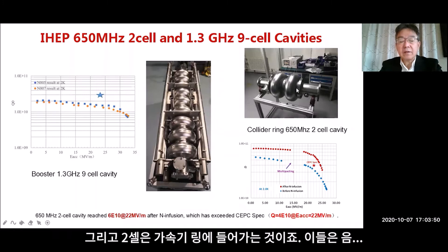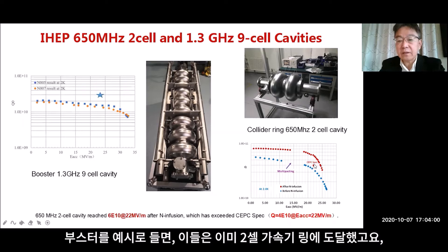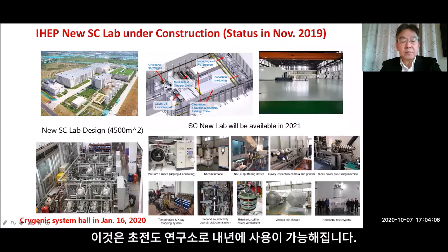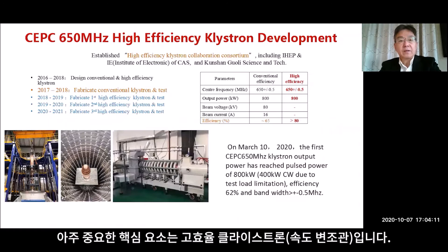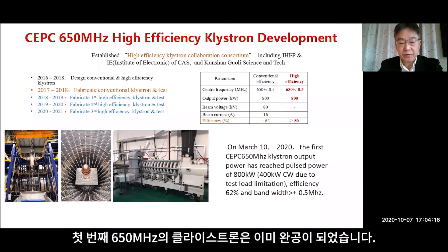The two-cell cavity is for the collider ring. For the booster, they have already reached the design goal, and the collider ring two-cell cavity has also already reached the design goal. A new superconducting laboratory will be available next year. A very key component is the high-efficiency klystron — the first 650 MHz klystron has been completed.